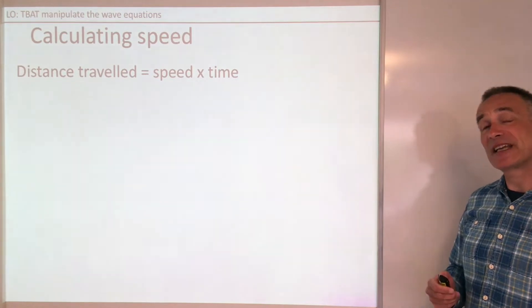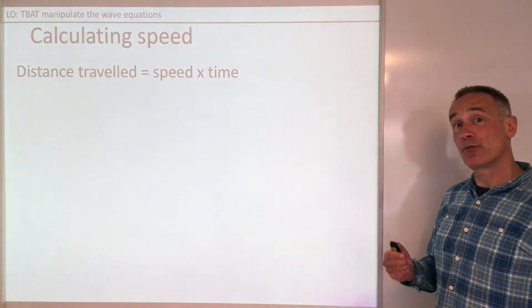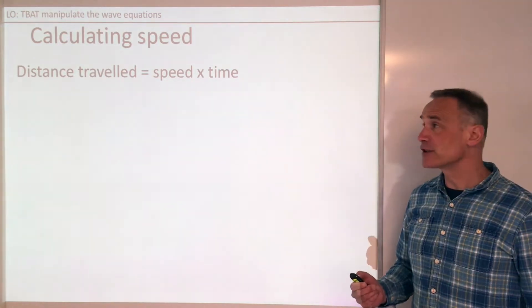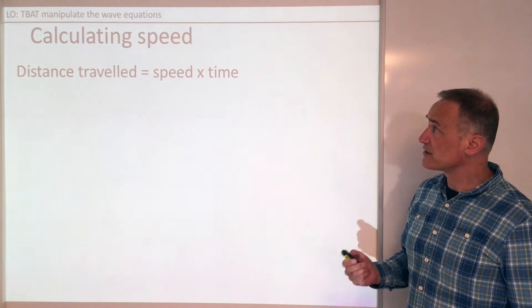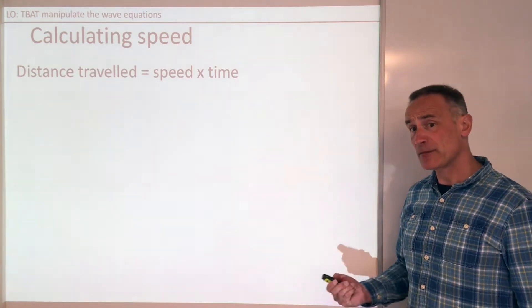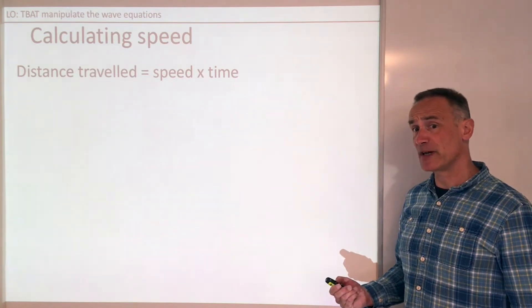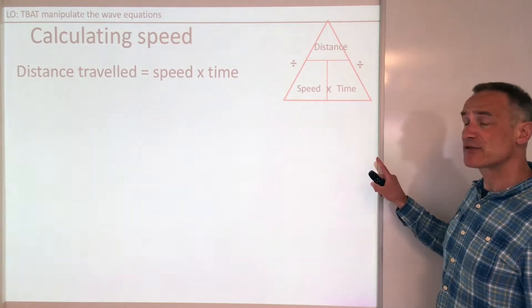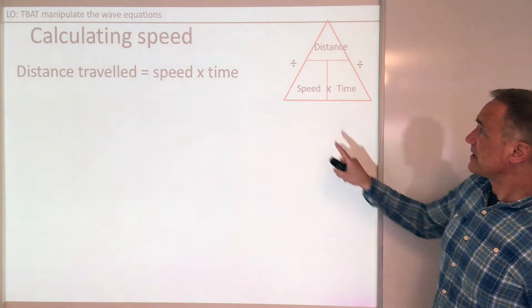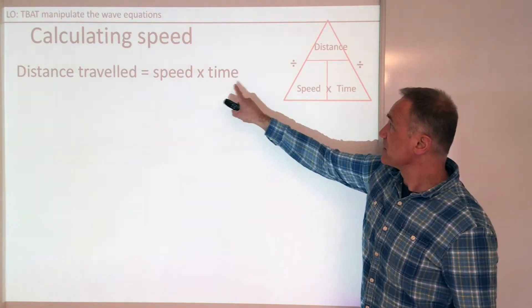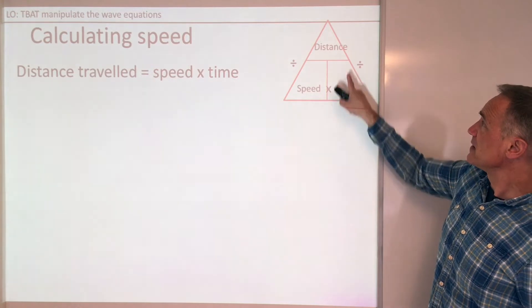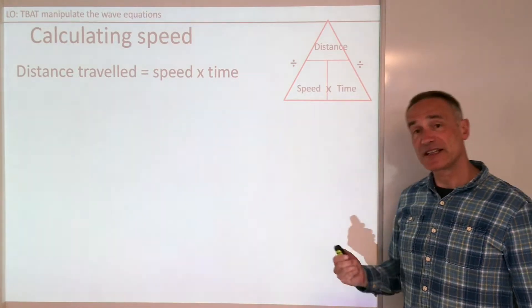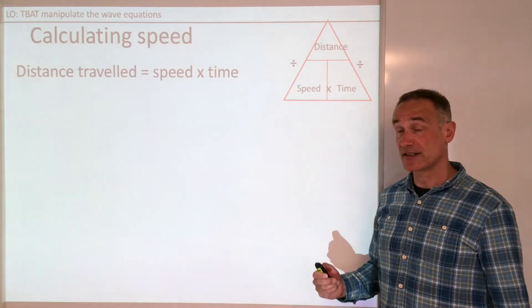So let's start with how we can actually measure waves using speed. The first equation: distance travelled is speed times time, which you probably remember from key stage 3. Distance goes at the top of the triangle. So let's use this to answer a question.